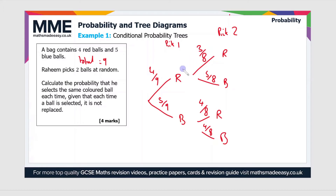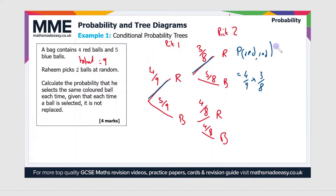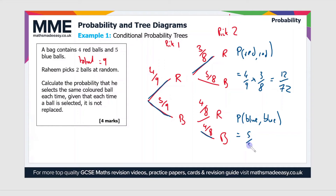Now we have to calculate the probability that he gets the same colour ball each time. There are two ways this can happen. The first is getting a red ball and then a red ball again, so P(red, red) is equal to four ninths times three eighths, which gives us 12 over 72. The chance of getting a blue and then a blue again, P(blue, blue), is equal to five ninths times four eighths, which is 20 over 72.